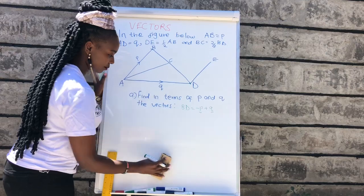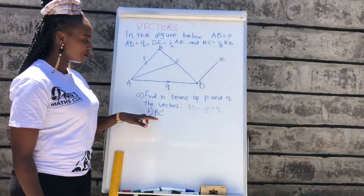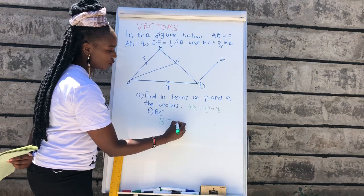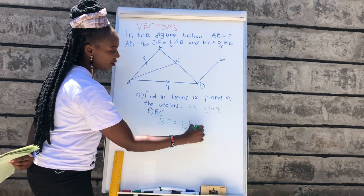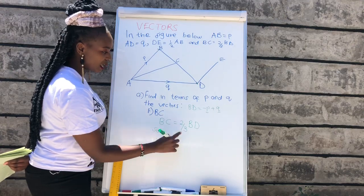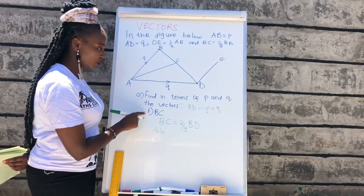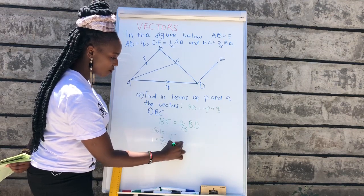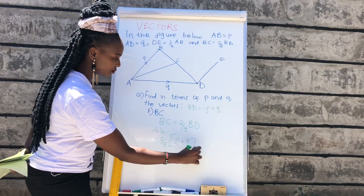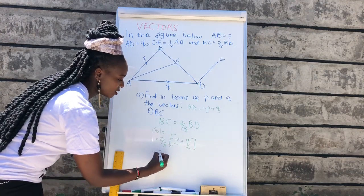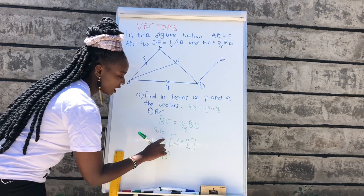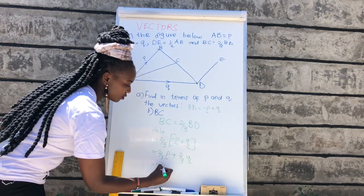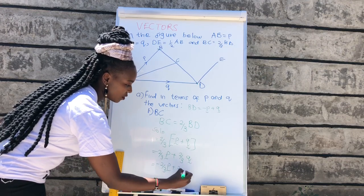For part 2, we've been asked to find BC. We were given BC equals two-thirds of BD. We found BD in our first question: BD was negative P plus Q. So BC becomes two-thirds of (negative P plus Q). Opening the bracket, this becomes negative two-thirds P plus two-thirds Q.